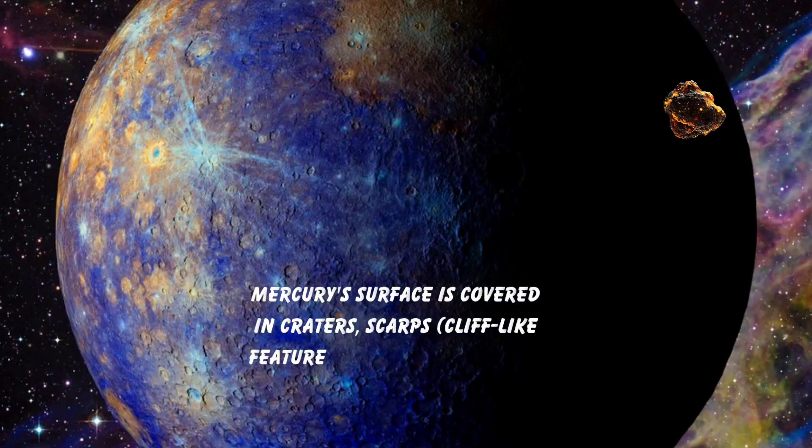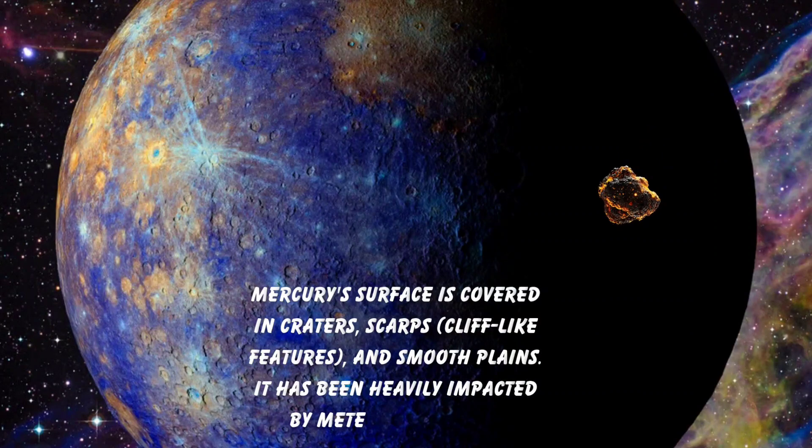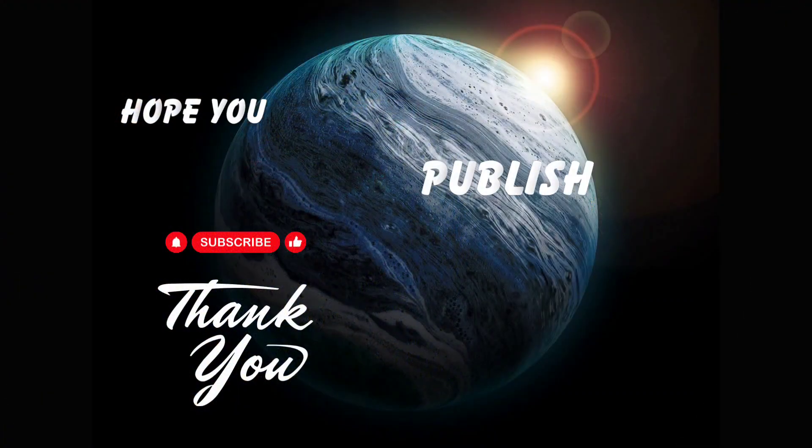Mercury's surface is covered in craters, scarps (cliff-like features), and smooth plains. It has been heavily impacted by meteoroid strikes.